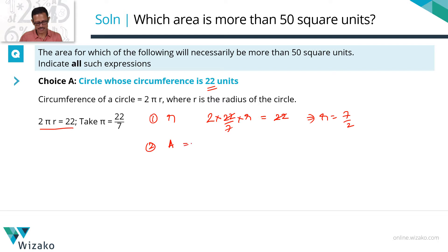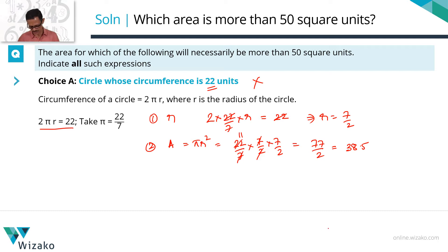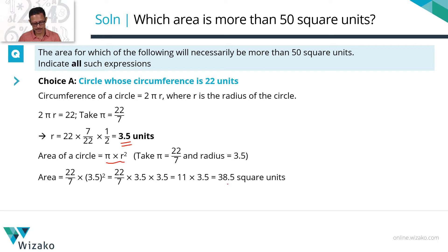Step 2: find the area. Area of a circle is πr². Taking π as 22/7 and r as 7/2, we get (22/7) × (7/2) × (7/2). The 7s cancel and 22 cancels with 2 to leave 11, giving 11 × 7 = 77, and 77/2 = 38.5 square units. This is not greater than 50, so choice A is not one of the answers where the area is necessarily greater than 50.